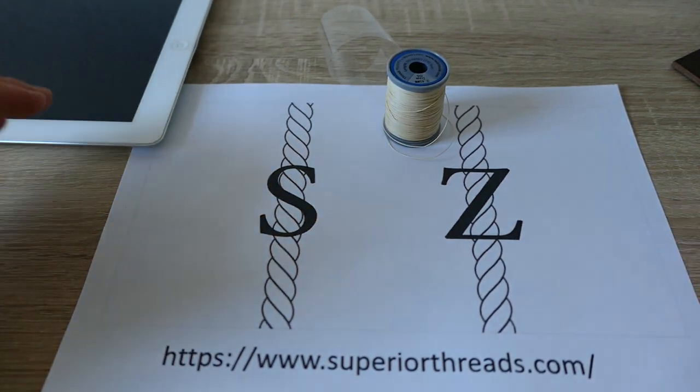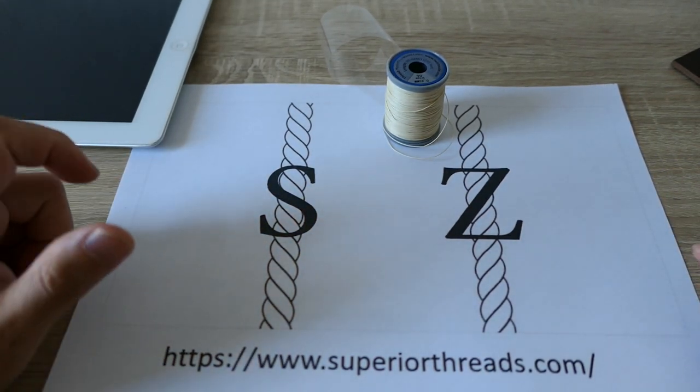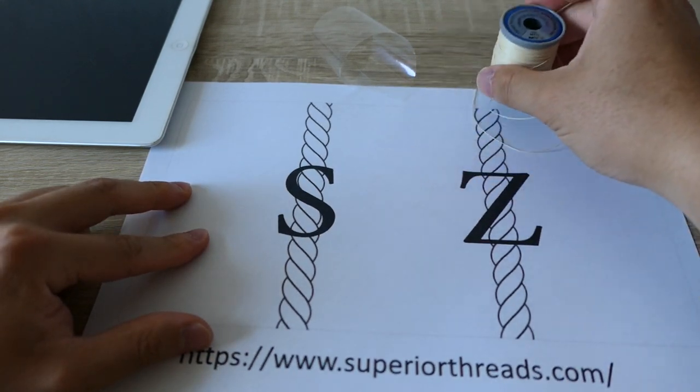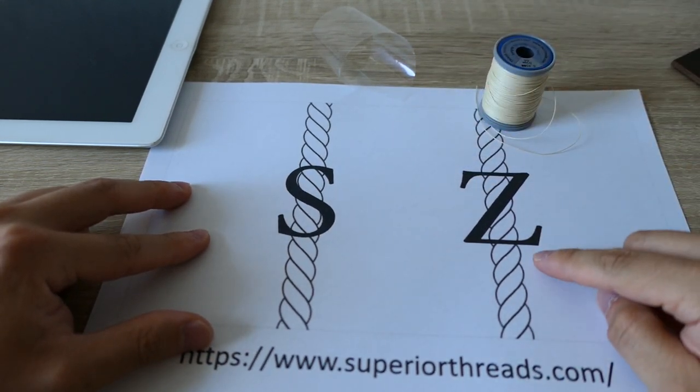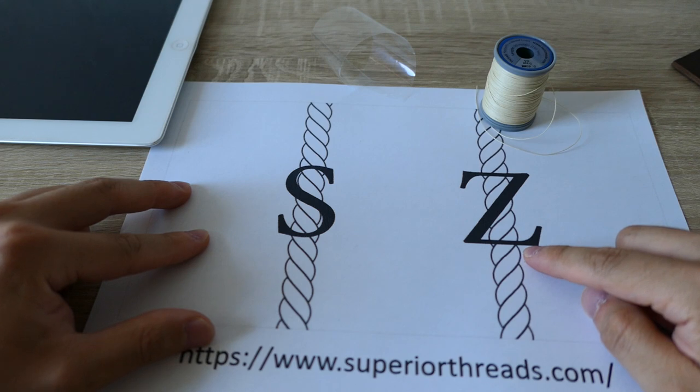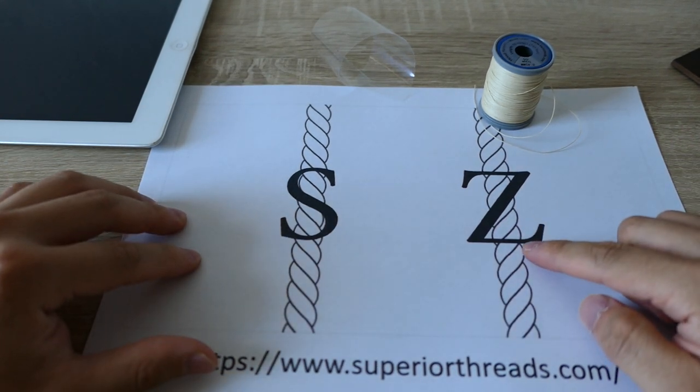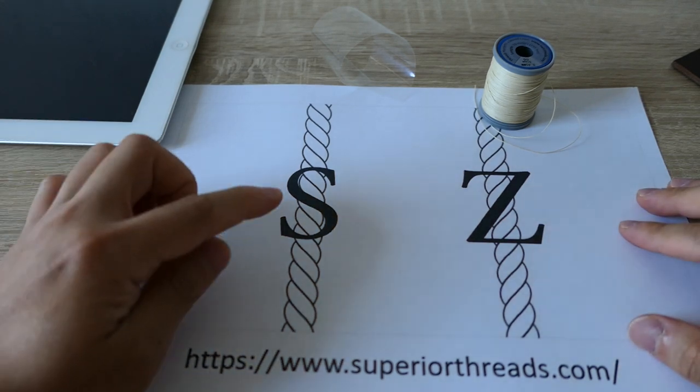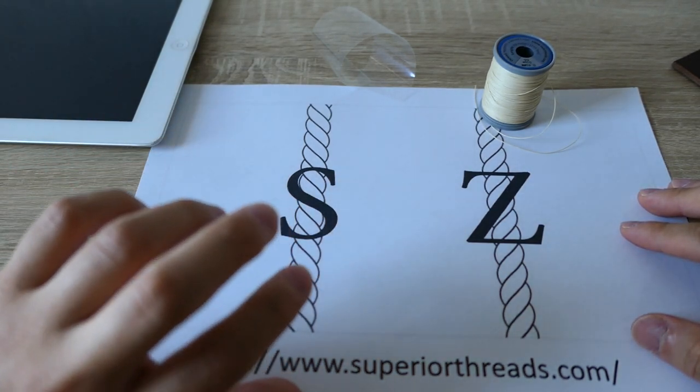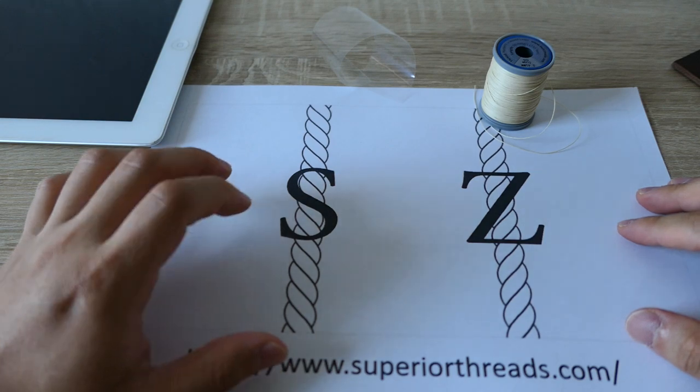There are two types of twists in thread manufacturing world. This is Z-thread, and 90% of the whole thread world are making thread in a Z-twist.